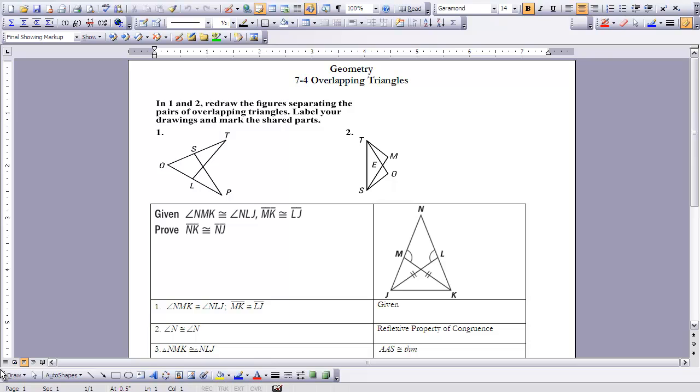one of the easiest strategies that you can use is to pull the two triangles and draw them separately. When you draw them separately, it's easier to see what things are congruent to each other and what things you want to try and prove to be congruent to each other in the proof.